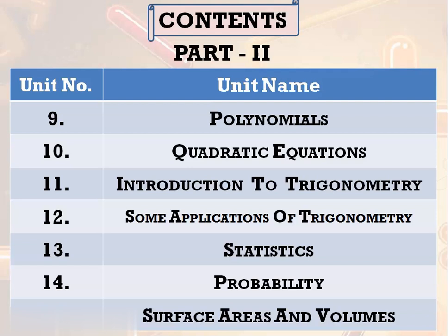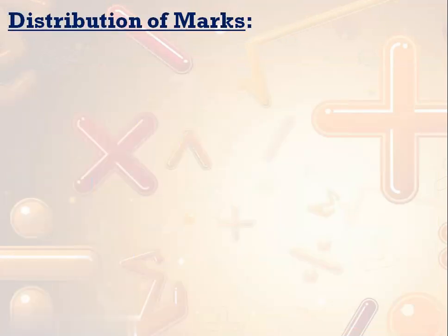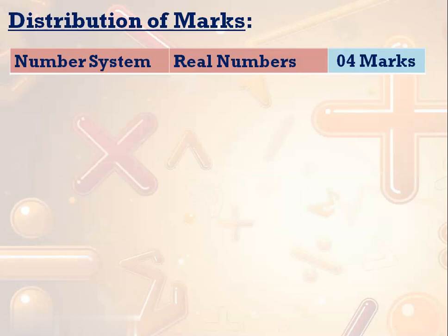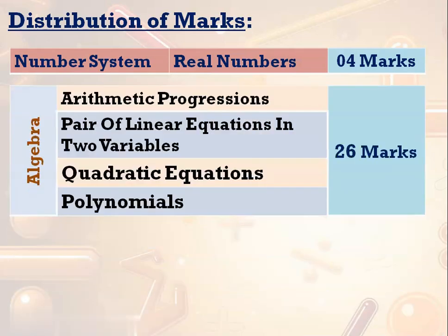In our 10th standard mathematics, the weightage given by the board is branch wise, not chapter wise. The complete class 10 mathematics is divided into 7 branches. The first branch is number system — we have one chapter in that branch. The board has allotted 4 marks for the chapter real numbers. These marks are given by the KSEAB board, not by me.